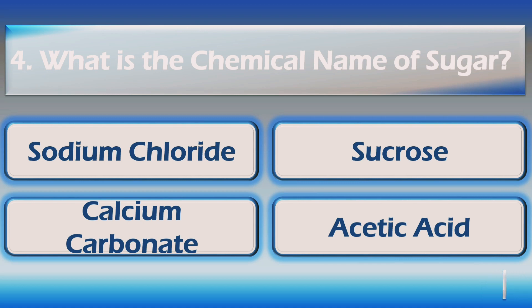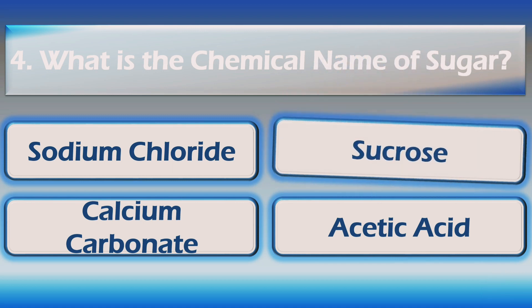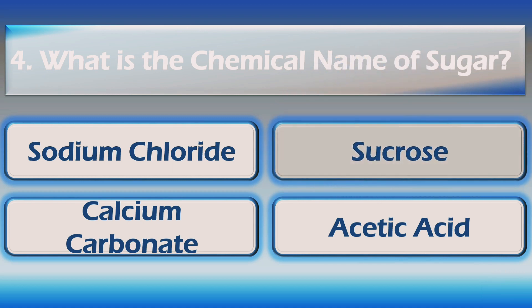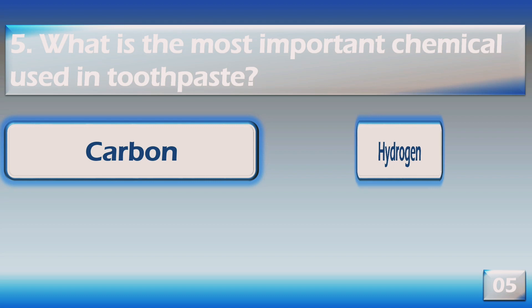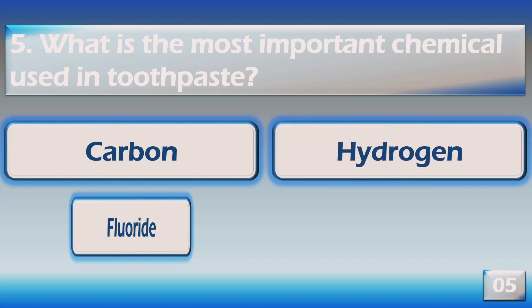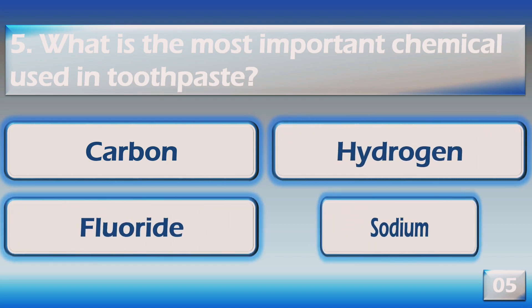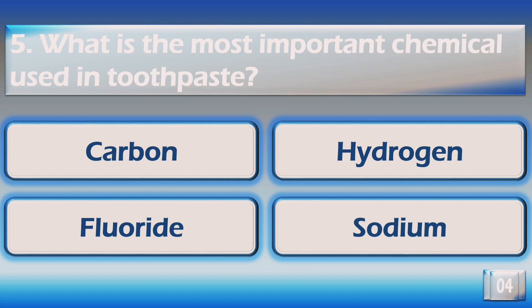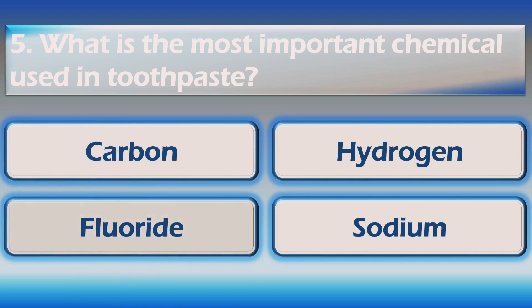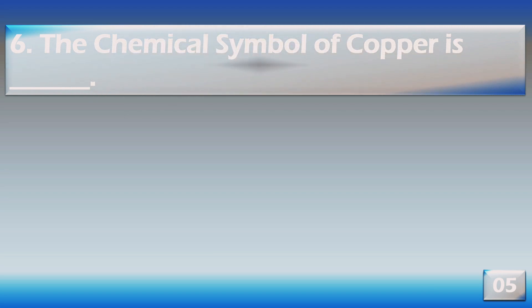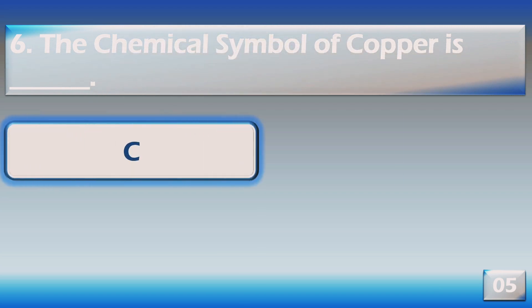The right answer is sucrose. What is the most important chemical used in toothpaste? The right answer is fluoride. The chemical symbol of copper is?